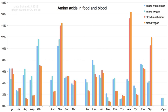20 of the proteinogenic amino acids are encoded directly by triplet codons in the genetic code and are known as standard amino acids. The other two — non-standard or non-canonical — are selenocysteine, present in many prokaryotes as well as most eukaryotes but not coded directly by DNA, and pyrrolysine, found only in some archaea and one bacterium.